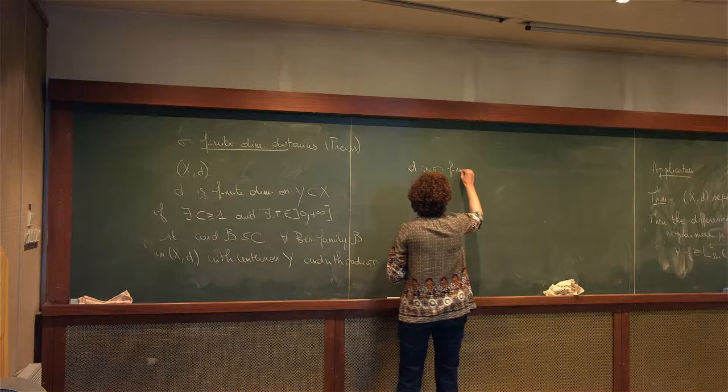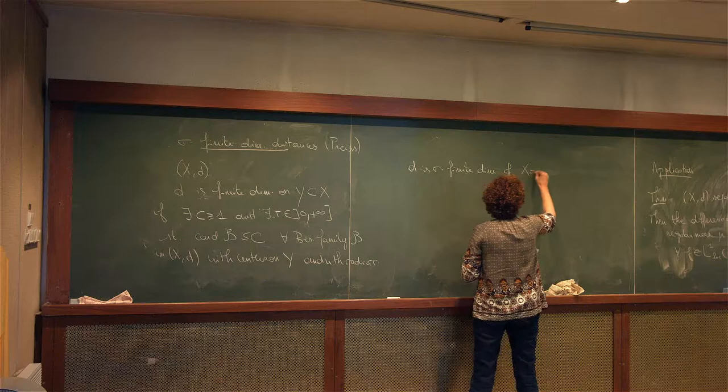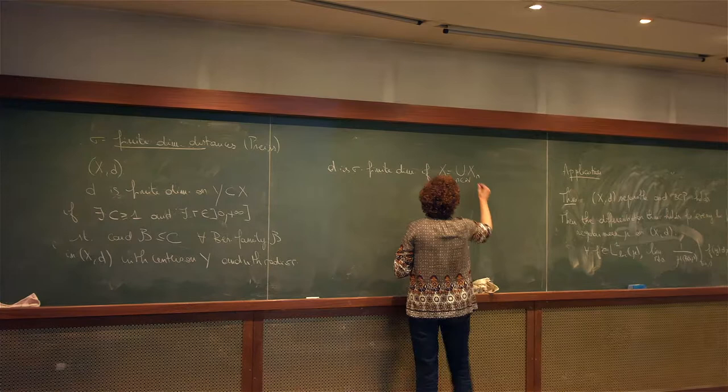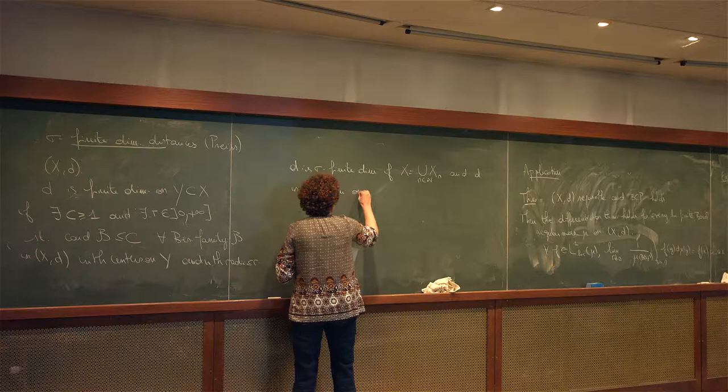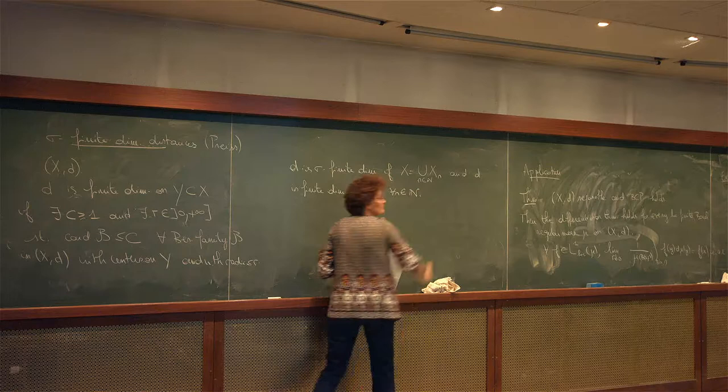I say that the distance is sigma-finite dimensional if I can write X as a countable union of subsets on which d is finite dimensional — so X can be written as a countable union of subsets X_n, and d is finite dimensional on X_n for every n.